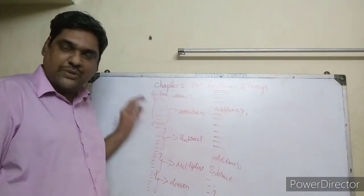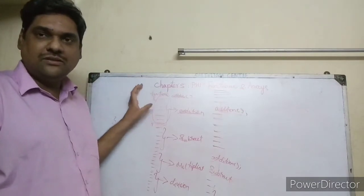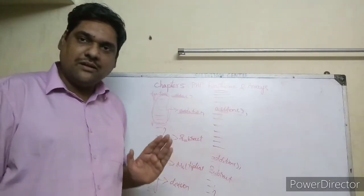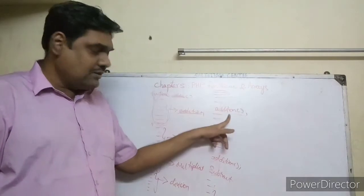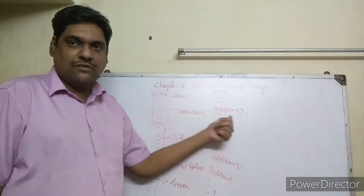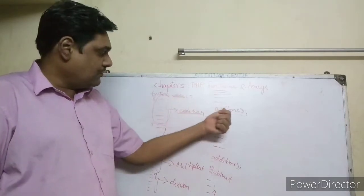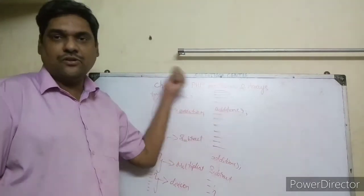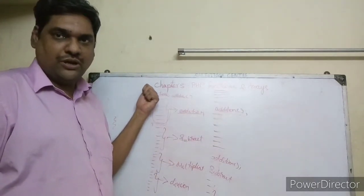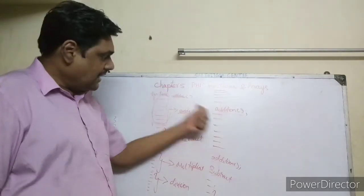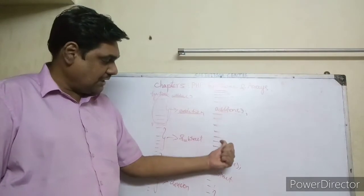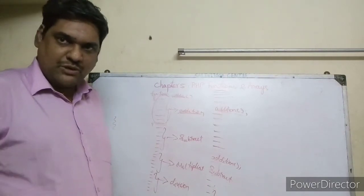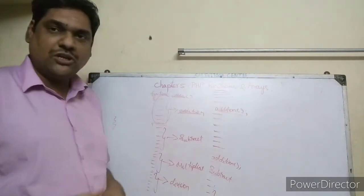At last you should put the close curly braces — this is the syntax for function definition. When you define a function, the program will just read it and keep it in memory. Only when you call the function will it get executed. When you make the function call, the code jumps to the function, executes all the statements, and then comes back. This is how a function works.